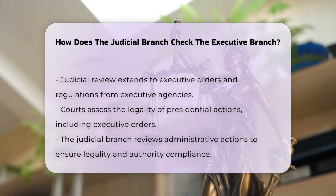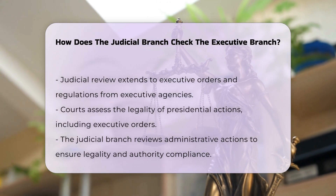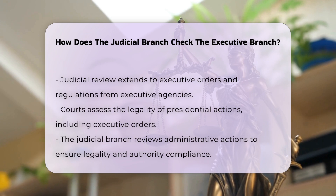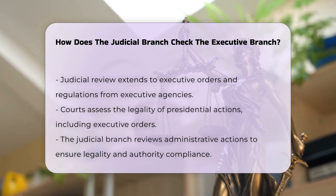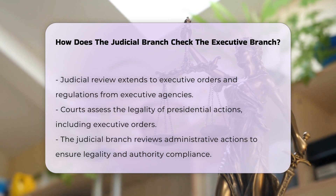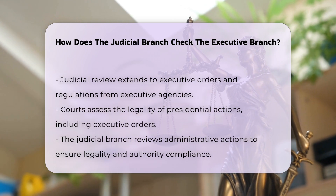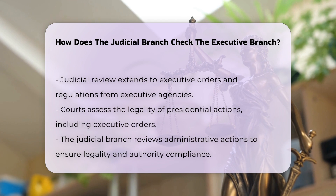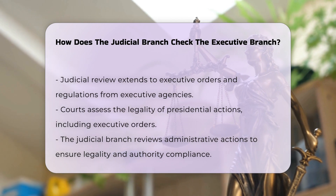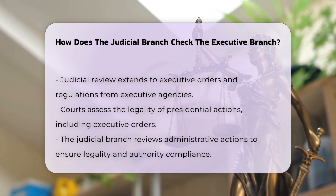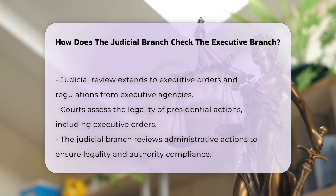The judicial branch also provides a check on the executive branch through the process of judicial review of administrative actions. Federal courts can review decisions made by administrative law judges and executive agencies to ensure they are lawful and within the bounds of their authority.